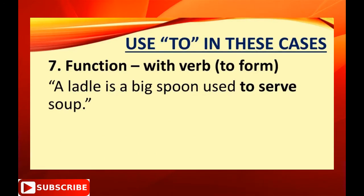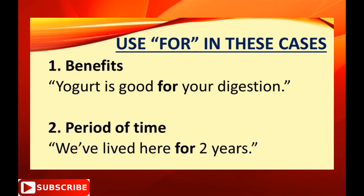Use 'to' when talking about a function with the verb in the 'to' form — for example, 'A ladle is a big spoon used to serve soup.' Use 'for' for benefits — for example, 'Yogurt is good for your digestion.'